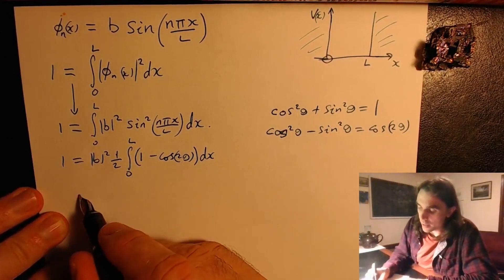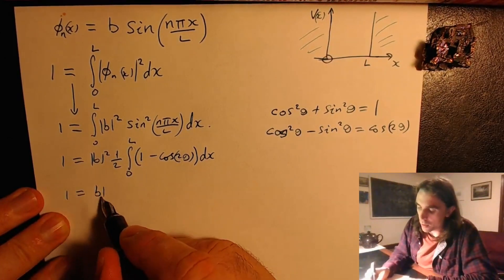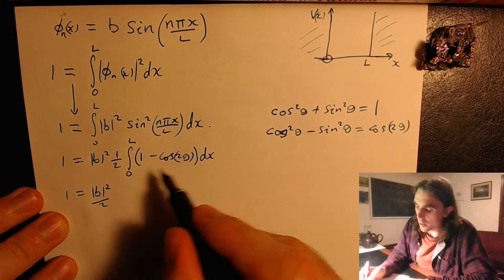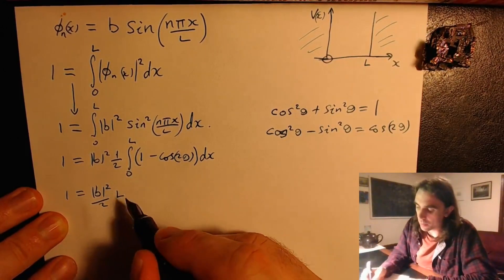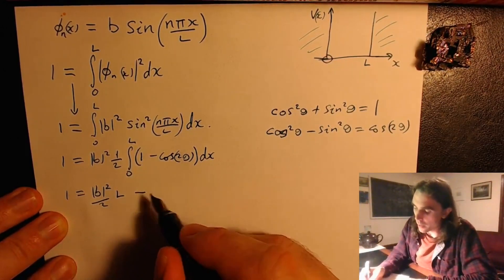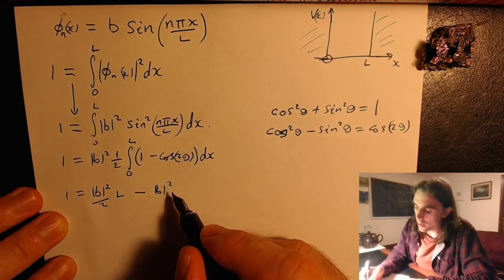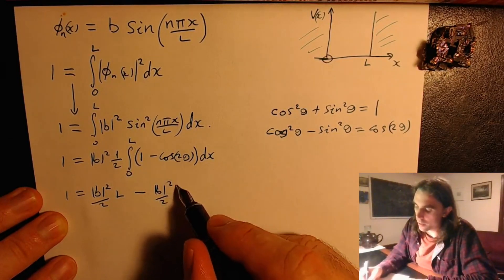The first part, just so we have 1 equals modulus b squared over 2, this one just gives us l. And then we have minus integral b squared over 2, integrate this, and we have sin.